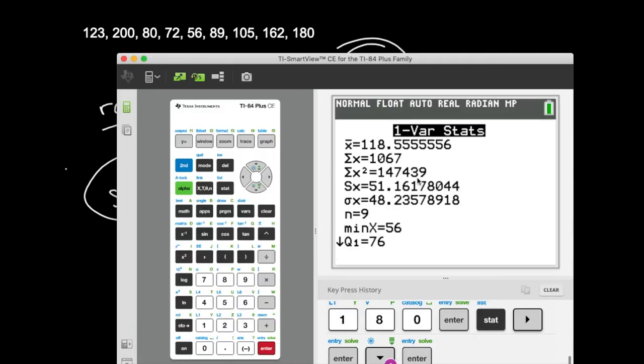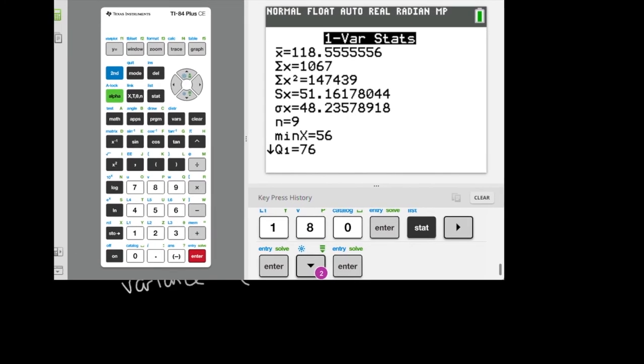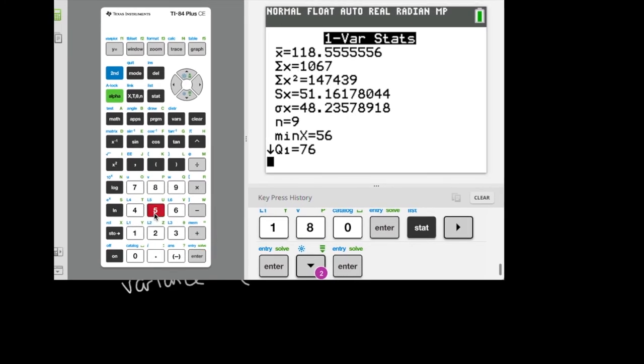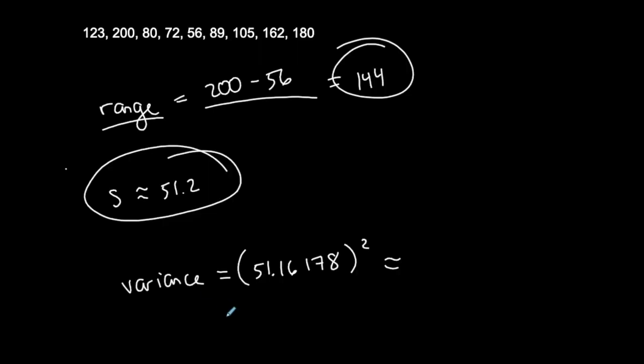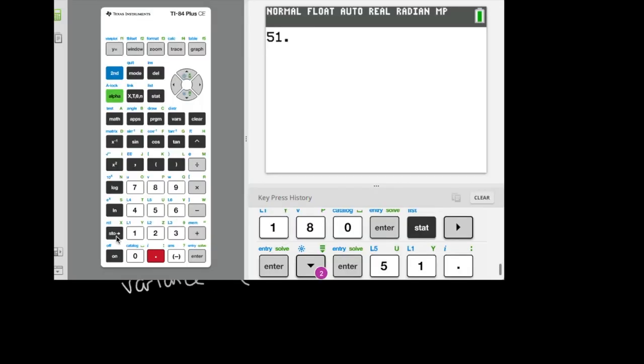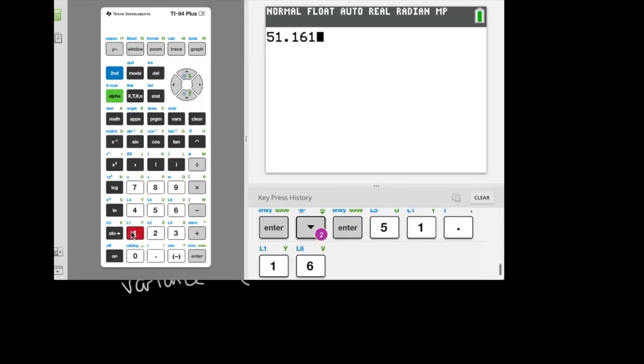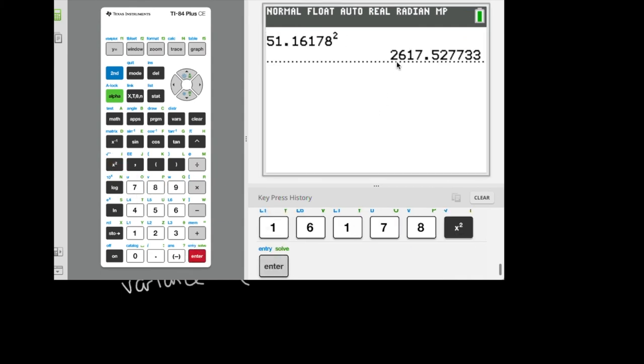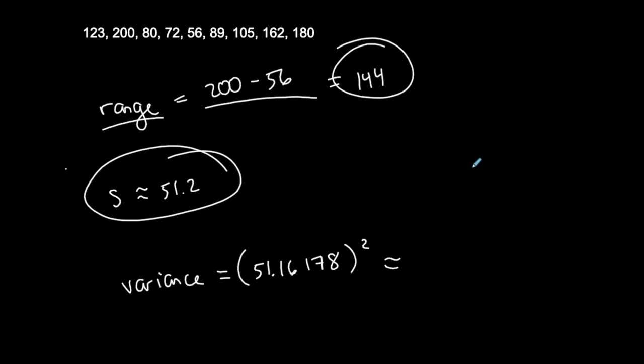So in my calculator, I'm going to take 51, what did I say? 1.6178, 1.6178 and square it to get my variance. So we're going to say 2617.5. 2617.5 is my variance.